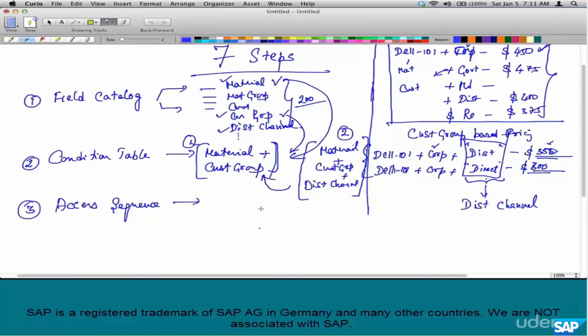An access sequence does exactly this. This is condition table one. This is condition table two. Two will be given first preference. And if two fails, meaning if you are not selling via distributor or direct, then default to one. So an access sequence is the sequence in which the condition tables are accessed.